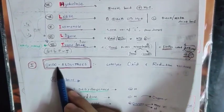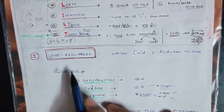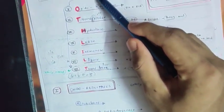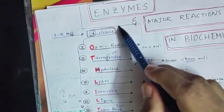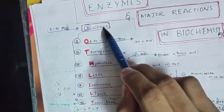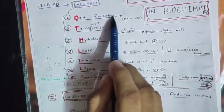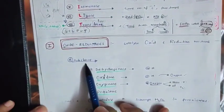Coming to the first class, Oxidoreductase. In Oxidoreductase we have six subclasses. IUBMB has classified total enzymes into seven major classes. Again, in the first class Oxidoreductase, we have six subclasses.